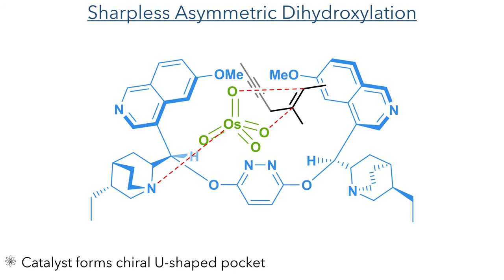We can look at the reaction transition state to explain the stereoselectivity. The cinchona-derived catalyst forms a U-shaped pocket which coordinates to the osmium tetroxide and forces the substrate to approach from only one face, thereby controlling the stereochemistry of the products formed.